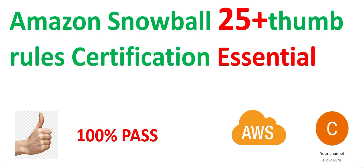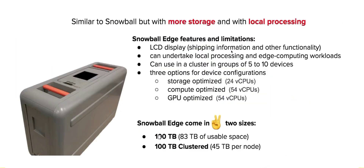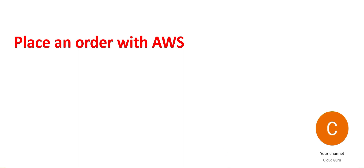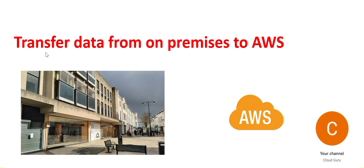Let's look at some of the thumb rules related to Snowball — these are very important from a certification standpoint. Thumb rule one: use Snowball if you have to transfer data from on-premises to cloud. If you have to move the data from on-premises to AWS cloud, you use Snowball. You can transfer using networks if you have good network speed, but that's when Snowball becomes the alternative.